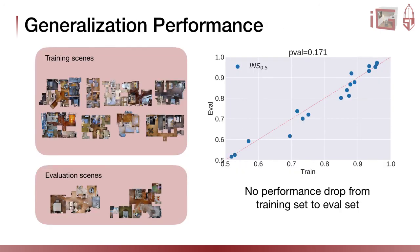Finally, to evaluate how well we generalize to unseen environments, we trained on 8 environments and tested on 2 unseen environments. We depict the interactive navigation score on the training set and on the evaluation set, and there is no performance drop from training to evaluation set, showing that the baseline policies can generalize to unseen environments and object configurations.